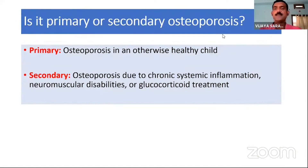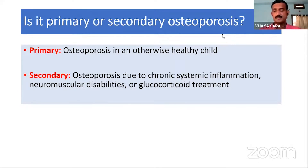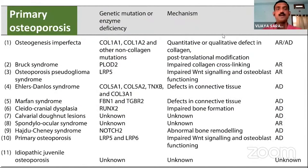The causes of osteoporosis in children are divided into primary and secondary. Primary causes include osteoporosis in a child who is otherwise healthy — no systemic illness — but has a primary bone disorder. Secondary osteoporosis is the opposite, where there is a secondary affection of the bone due to a systemic disorder like rheumatoid arthritis. The most common primary cause is osteogenesis imperfecta, and among those, the most commonly affected gene is the alpha subunit of collagen type I.